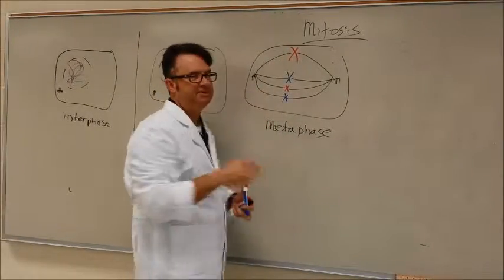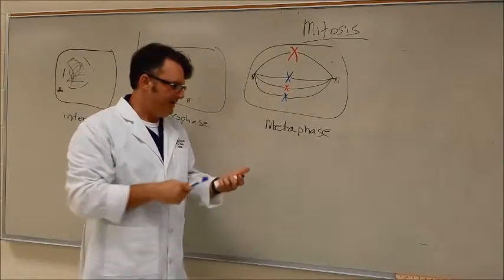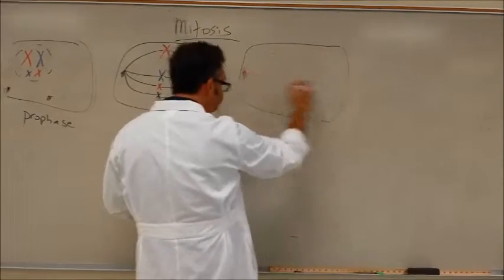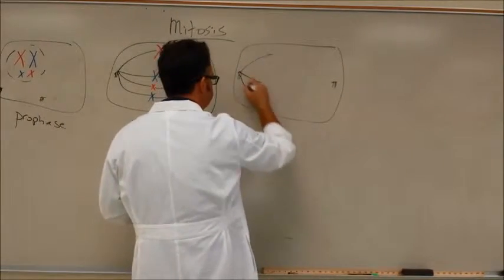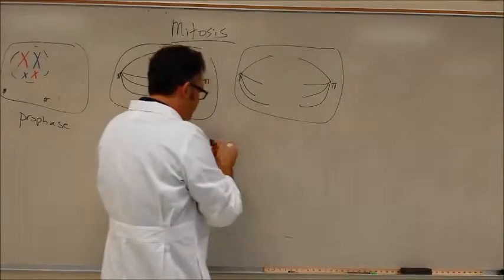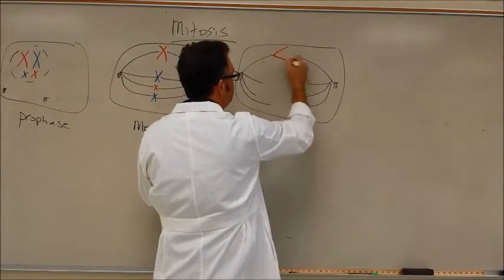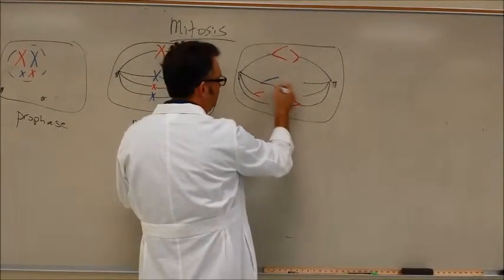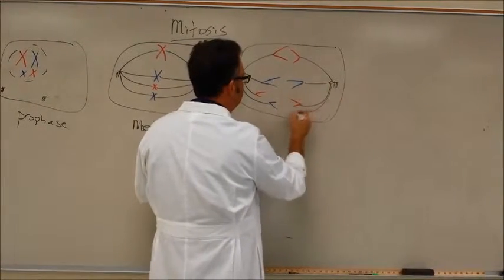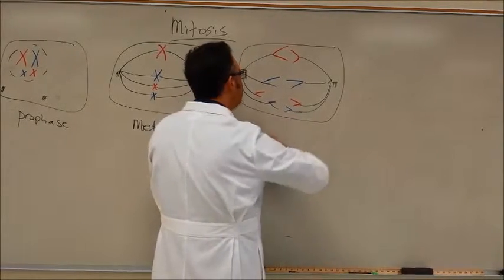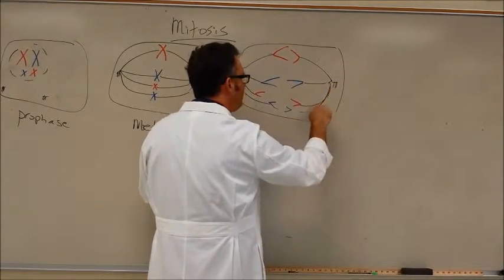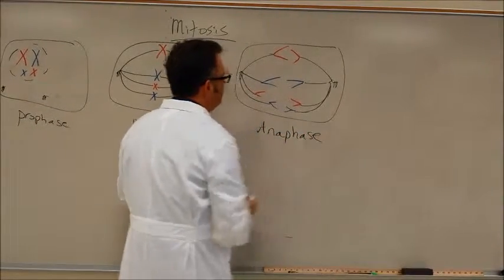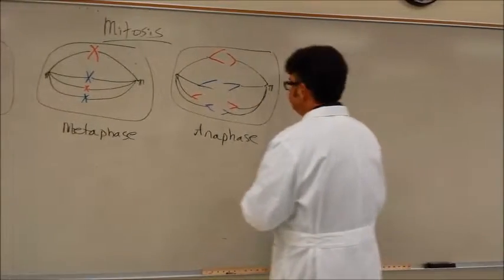Remember that we learned that the spindle fibers attach to little places called kinetochores on either side. The next phase of mitosis is anaphase. I've got centrioles on opposite sides of the cell. And so what is somehow magically happening now is that these chromosomes are splitting into chromatids. They're being pulled to opposite poles. So I've got a big red and a big red, a big blue and a baby blue that are coming apart as well. That is anaphase.